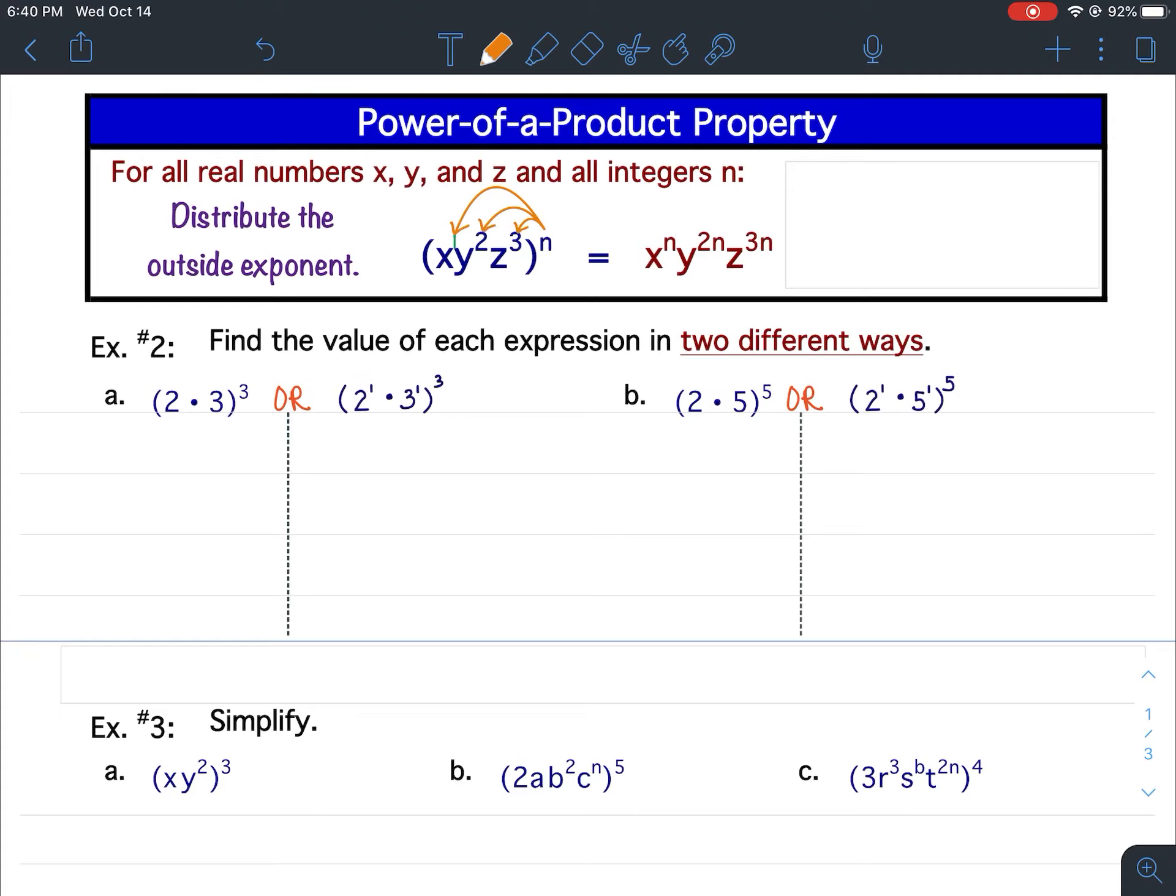So I distributed that outside exponent. And again, what that means is I apply the outside exponent to each inside exponent by multiplying, and also the coefficient. Now in this case, there wasn't a coefficient. The coefficient would be 1, and we don't really need to worry about a positive 1. But you take the outside exponent, you distribute it, meaning that you multiply it by each of the inside exponents.